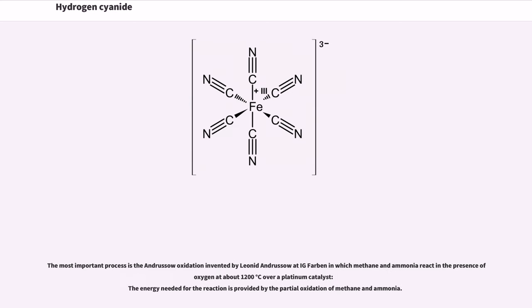The most important process is the Andrussow oxidation, invented by Leonid Andrussow at IG Farben, in which methane and ammonia react in the presence of oxygen at about 1200 degrees Celsius over a platinum catalyst. The energy needed for the reaction is provided by the partial oxidation of methane and ammonia.